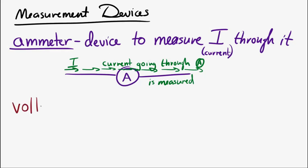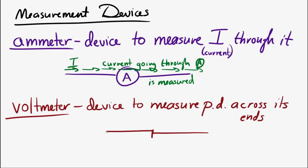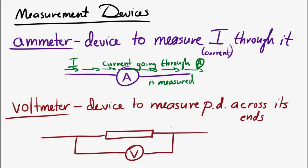A voltmeter is a device to measure the potential difference across its two ends. I'll draw a voltmeter symbol here, and if we attach it to a resistor, the voltmeter will measure the potential difference across its two ends. So there's an ammeter and a voltmeter.